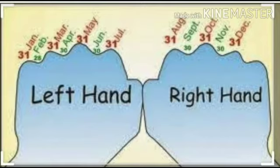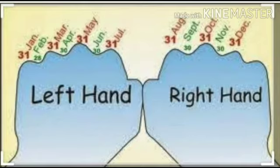Firstly the upper curve, then lower curve, then upper curve, then lower curve. Ye curves jo hain, number of days indicate karte hain. Tau jo upar curve hai un months mein 31 days honge. And jo niche curve hai un months mein 30 days honge — except February, because February mein sirf ya toh 28 ya 29 days honge.